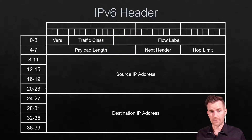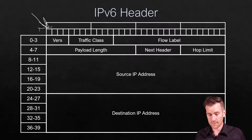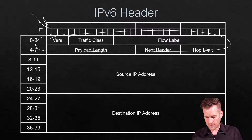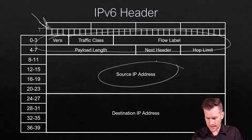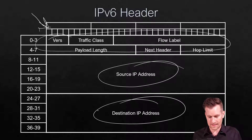Here's the IPv6 header, using the same diagram formatting. We see that there are far fewer fields, but the source IP address and destination IP address take up a lot more space because each one is 128 bits wide.